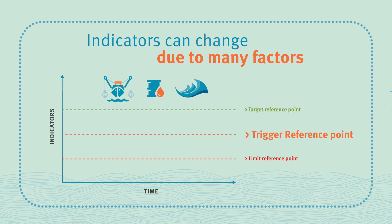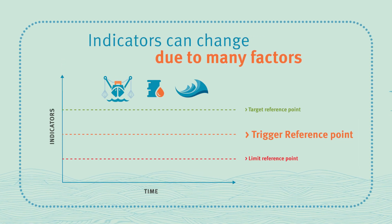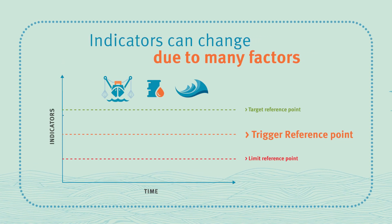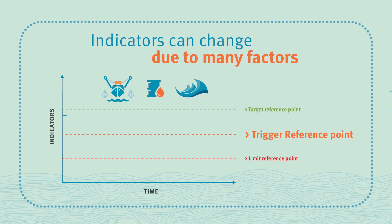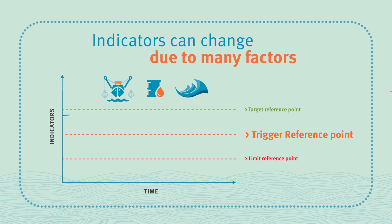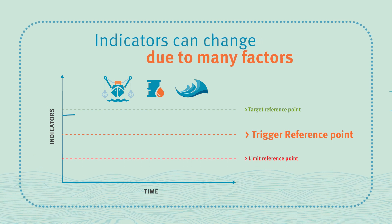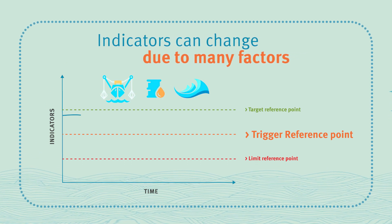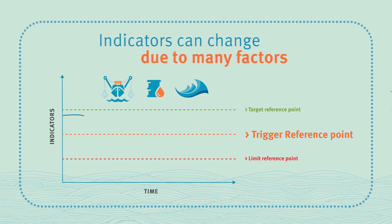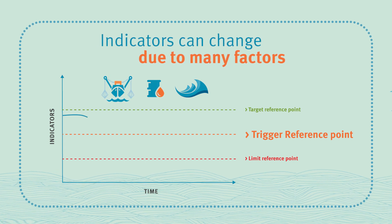Indicators are used to track the performance of the fishery over time. Biomass is an example of a key indicator that can be used to measure how fish stocks are coping with fishing and other pressures.